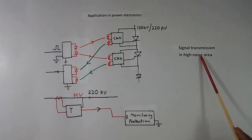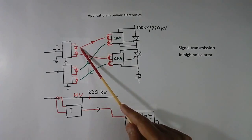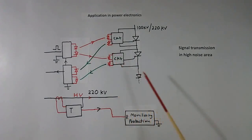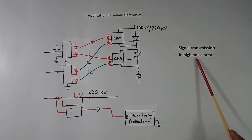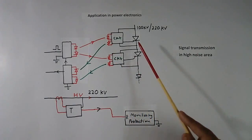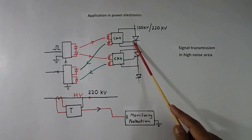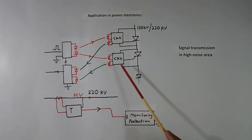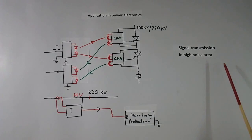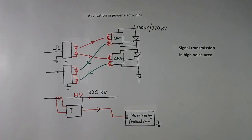In locomotives connected in a train, optical cables are used for normal signal transmission as well as for triggering and any other application. Today, this much only.